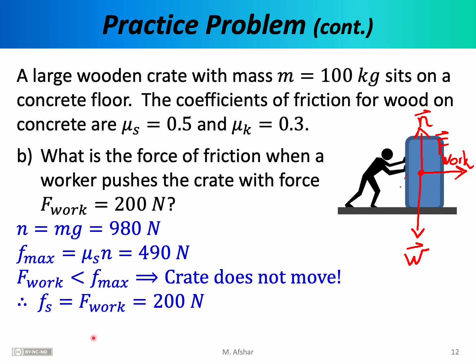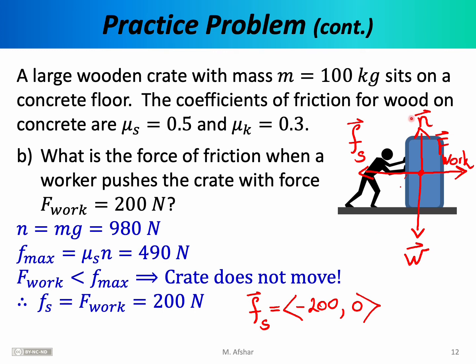Since the crate remains at rest, we're justified in talking about static friction. The force of static friction is simply 200 newtons, reacting to the only parallel force — the worker pushing with 200 newtons to the right. So static friction acts with 200 newtons to the left. We can write static friction as (−200, 0) newtons, though the direction is implied by the force diagram.